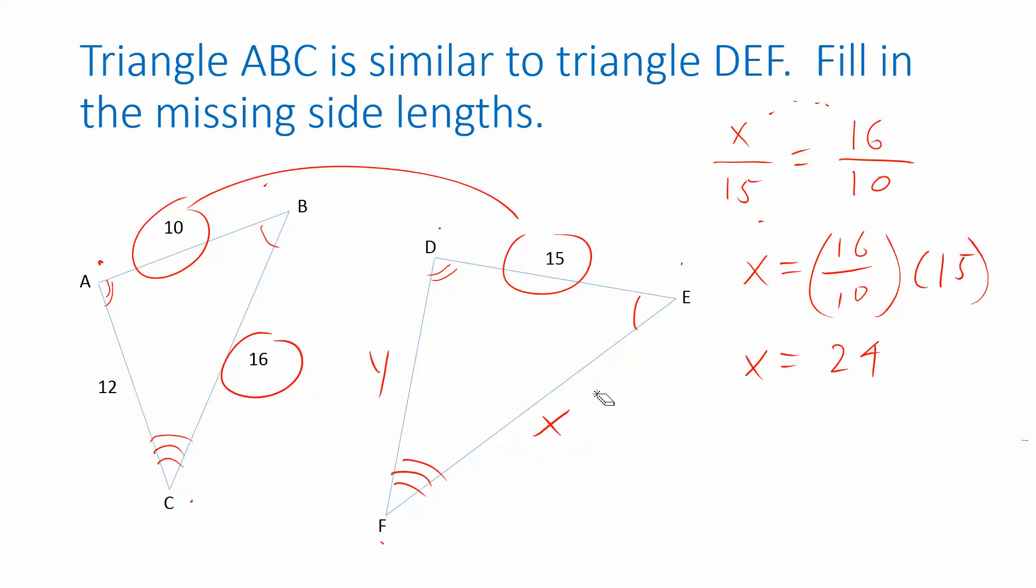So let's do the same thing now to figure out Y. So Y goes between D and F. That corresponds, D to F corresponds with A to C, which we know is 12. And then again, I could use the number 15 I know for the second triangle between D and E. That side length matches up with A to B, which is 10. These ratios are the same. I can isolate Y. It's 12 over 10 times 15, and that works out to 18.